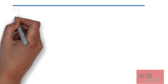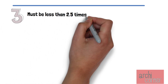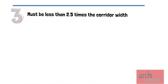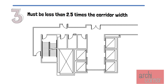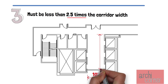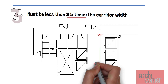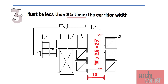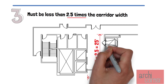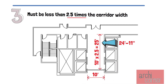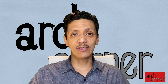There's a third exception, and this is that a corridor must be less than two and a half times the corridor width. To show you what this means, let's take a look at a make-believe elevator corridor. Let's say that the width of the corridor is 10 feet. This exception allows the elevator corridor length to be determined by multiplying the width by two and a half. In our case, 10 feet times 2.5 equals 25 feet. Therefore, our corridor must be less than 25 feet in length — so technically, 24 feet 11 inches would work.